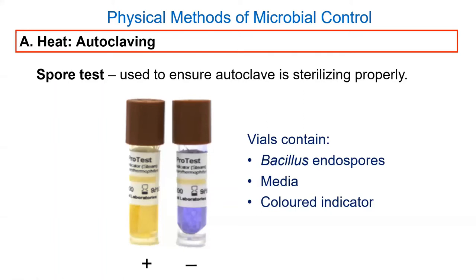One thing is quality control to test autoclaves. On a daily basis, you put a little piece of tape on your objects and the tape has stripes that turn dark to tell you it worked - but that tape will actually go off at lower than 121 degrees. So once a month we actually do a biological test: we have little vials containing Bacillus endospores. You autoclave these and then stick them in an incubator to see if the endospores are going to grow, with a colored indicator to show the autoclave has passed the test. We'd do this every day, but they're expensive, so once a month is the standard.